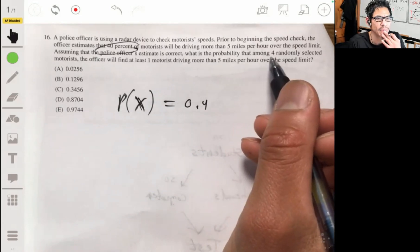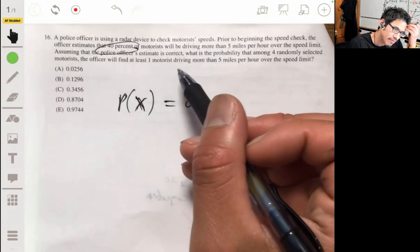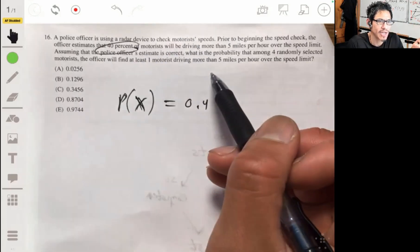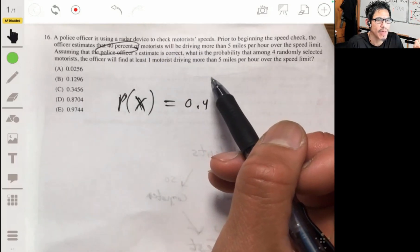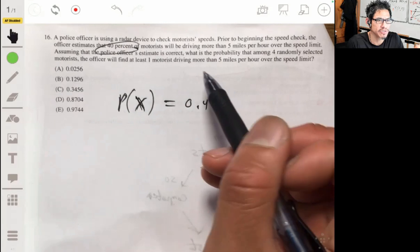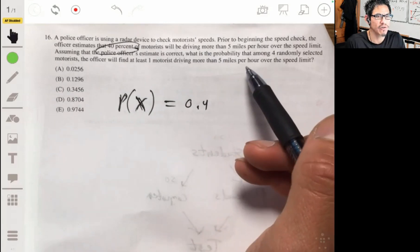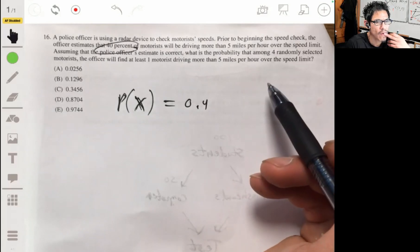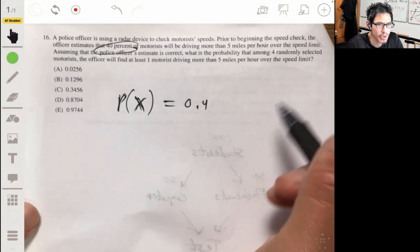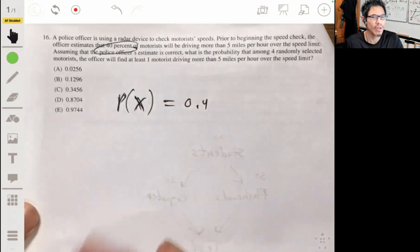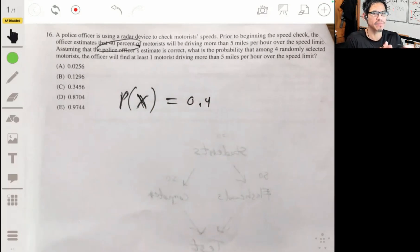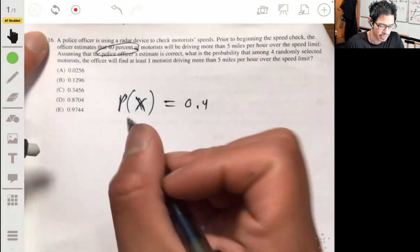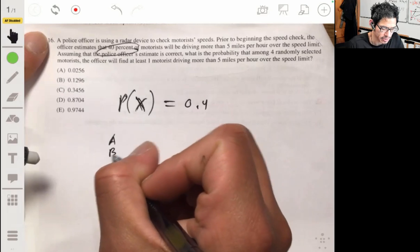We're asked, what's the probability that among all four of those drivers, the officer is going to have at least one of them that he's going to have to give a ticket to, because at least one of them is driving more than 5 miles over the speed limit? Okay, so you have four individuals. It doesn't matter which one gets a ticket as long as one of them. Let's say you have individuals A, B, C, D.